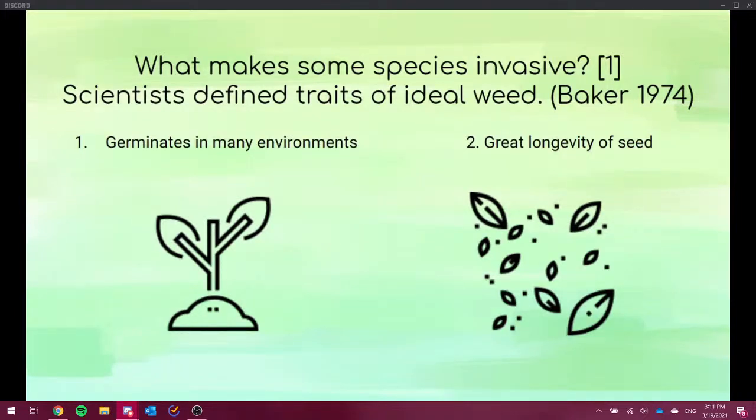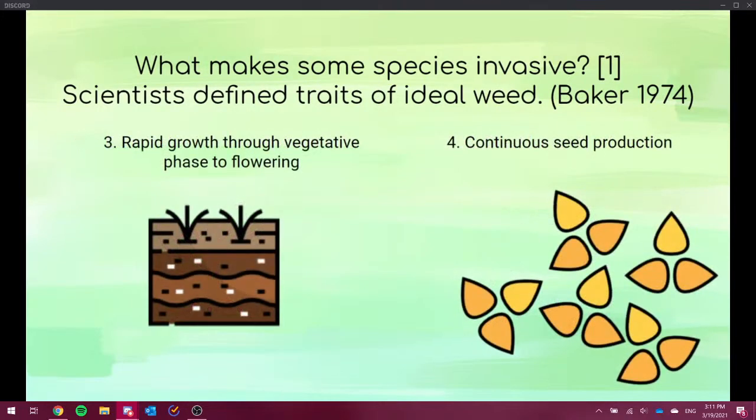Okay. What makes some species invasive? So the traits of ideal weed. So it germinates in many environments, which is pretty self-explanatory. The more environments you can take, the more invasive you will be. The great longevity of a seed. Because the longer seed stays alive, the greater are chances for it to germinate.